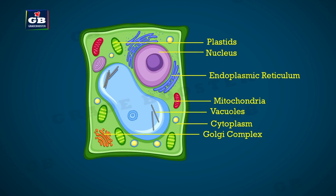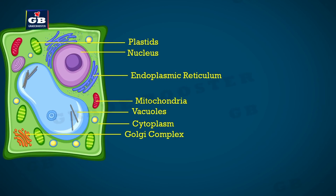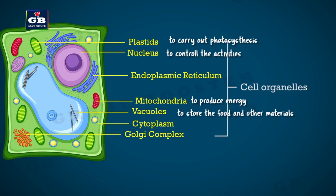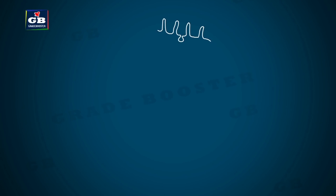A cell is very small, yet it has many parts. The parts present in a cell are called cell organelles. These cell organelles keep the cell alive by helping it perform its tasks. Each kind of cell organelle performs a special function, such as making new material or clearing waste. Every living cell has the capability to perform certain basic tasks, and these basic functions are common to all living things.